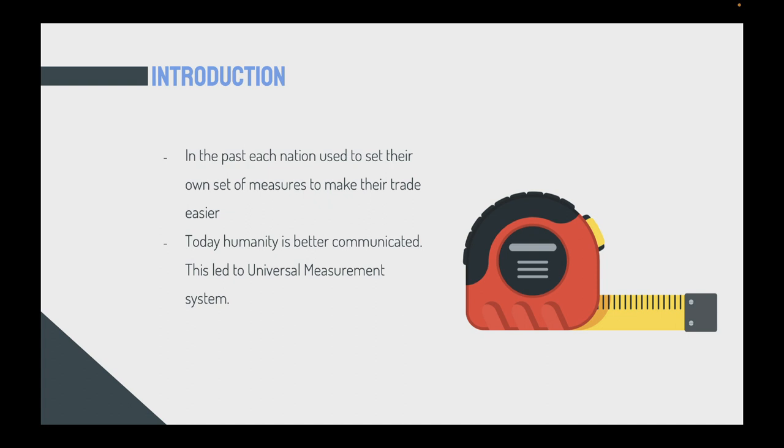In the past, each country or nation used their own set of measures so that it would make their trade and life easier because people used to exchange stuff. Today, humanity is better connected and communicated than before. This made nations closer together so that they could sit together on one table and agree on more generalized systems for describing units and dimensions.